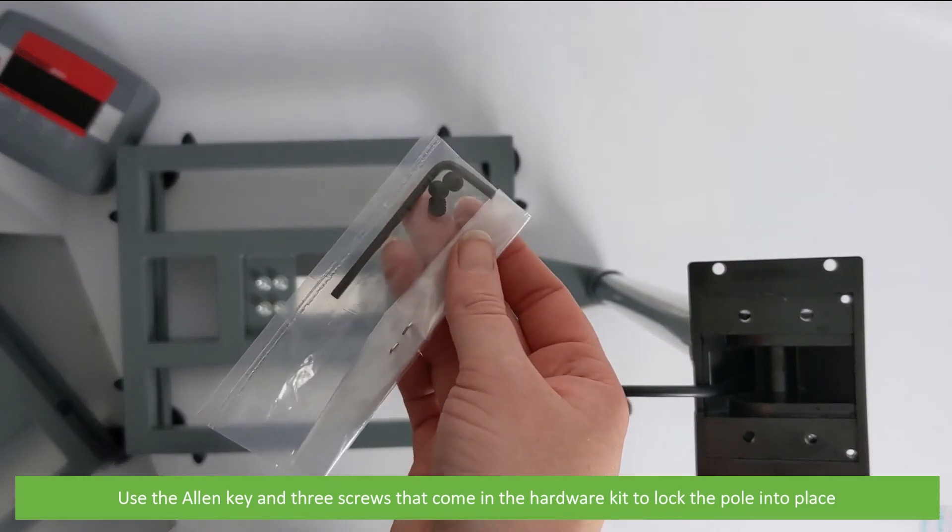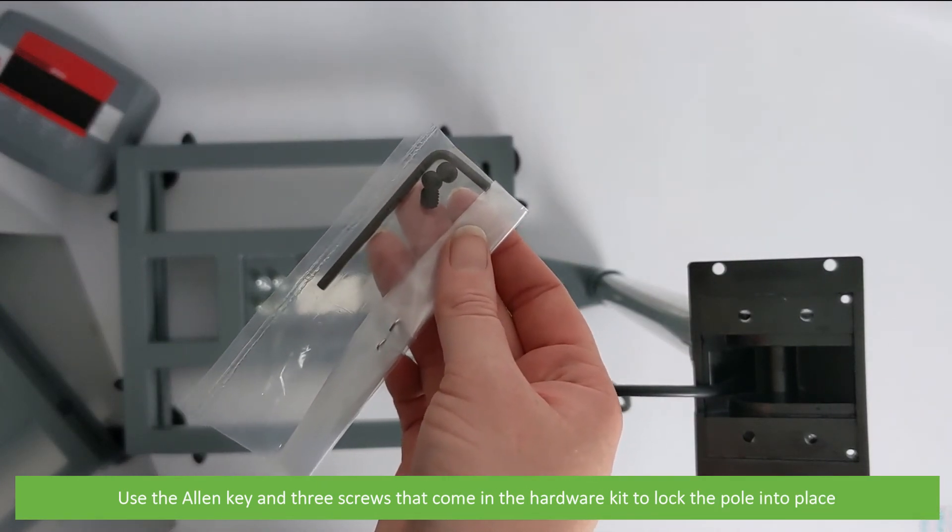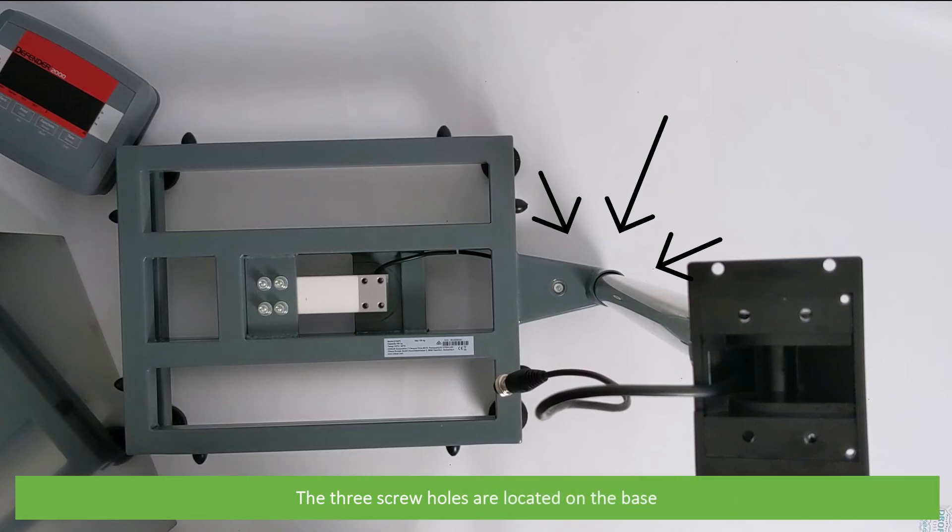Use the allen key and three screws that come in the hardware kit to lock the pole into place. The three screw holes are located just on the base.